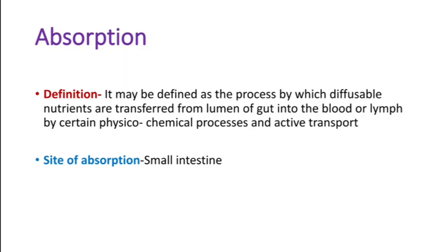First of all, absorption may be defined as the process by which diffusible nutrients are transferred from the lumen of the gut into blood or lymph by certain physiochemical processes and also by active transport. In this lecture we will discuss all the processes in detail. The site of absorption is the small intestine.